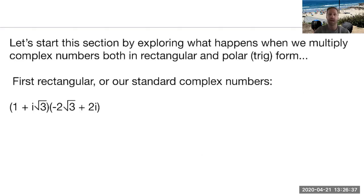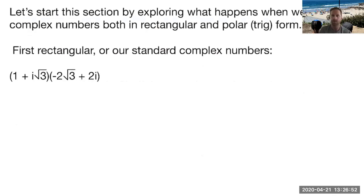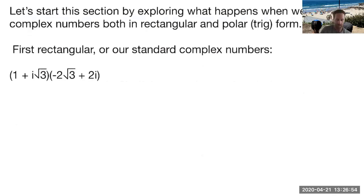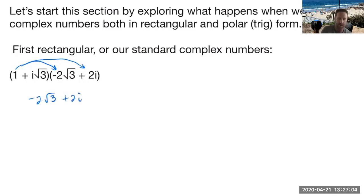We're going to start off by looking at what it looks like to multiply complex numbers in their rectangular form. I wanted to do this before we see the polar or trig form of it, so hopefully you remember how to distribute or FOIL. When I multiply the one times both terms I just get back negative two root three plus two i.